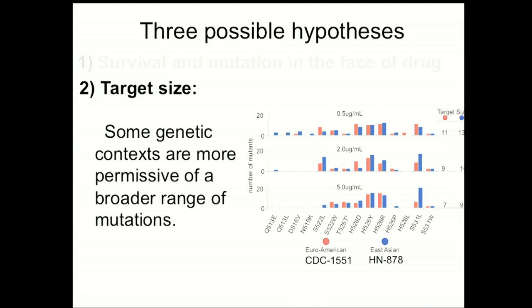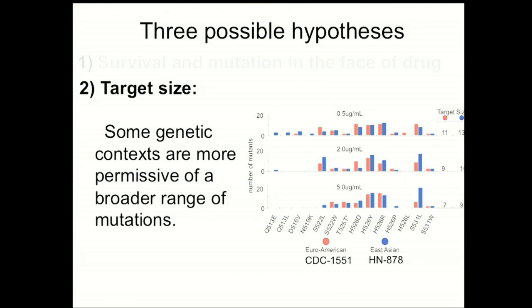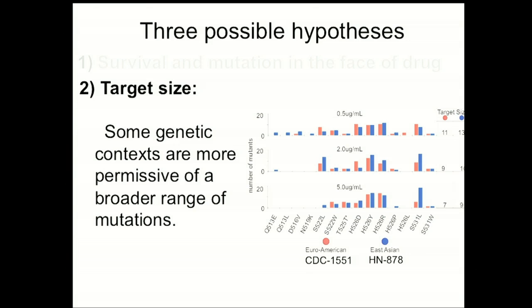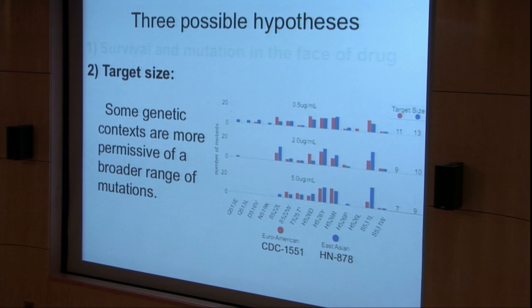That still leaves our target size hypothesis — that some genetic backgrounds may be more permissive to a broader range of drug resistance mutations than others. To ask that, we sequenced RPOB out of 600 of our RIF-resistant isolates, 300 from each strain, across 100 colonies on three different drug concentrations. We notice two trends. First, as we increase drug concentration, our target size becomes smaller — mutations conferring low-level RIF resistance disappear — and that's true for both our Euro-American isolate CDC1551 and East Asian isolate HN878. Second, for each drug concentration tested, there are many blue bars unpaired with red bars, suggesting the East Asian lineage acquires more mutations than the Euro-American lineage, supporting the target size hypothesis.